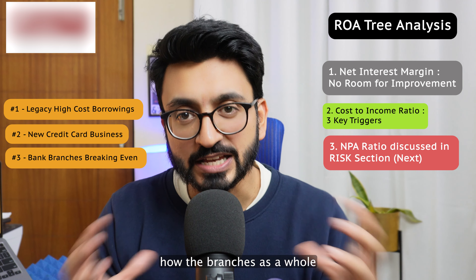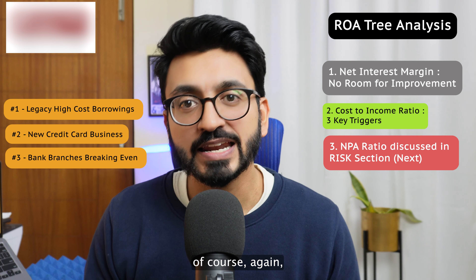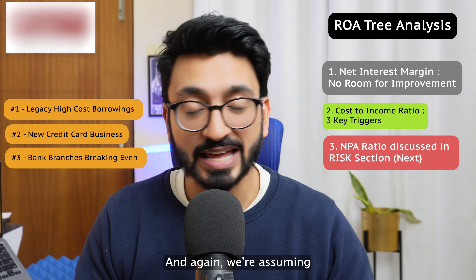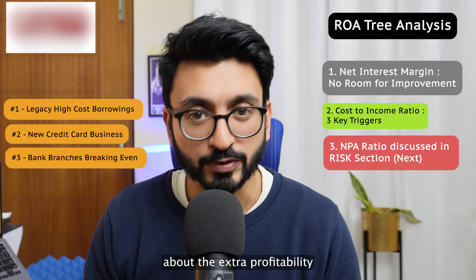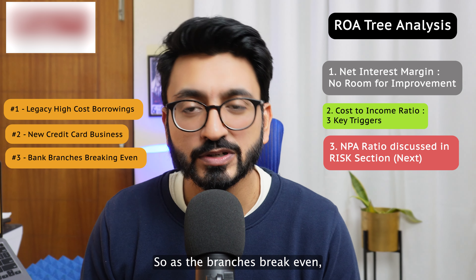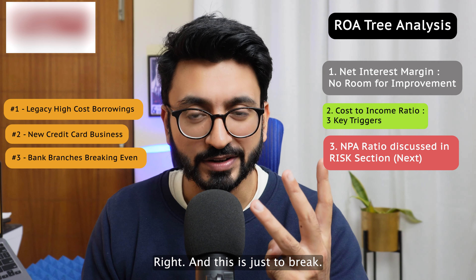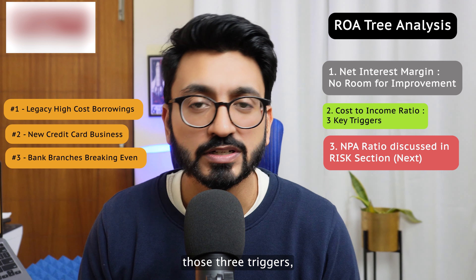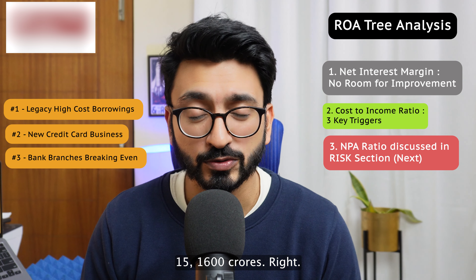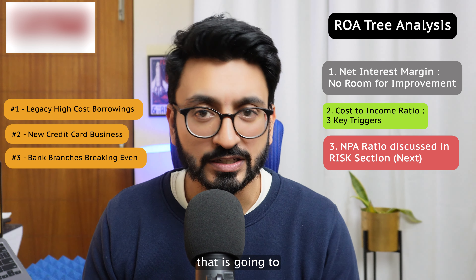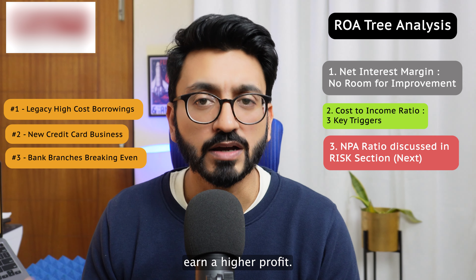The third source is the branches themselves. We discussed how the branches as a whole are still loss-making because they are relatively new and haven't broken even. As these branches mature and break even — and we're just assuming break-even here, not even talking about extra profitability — the bank is expected to save roughly around 500 crores. So adding all three triggers together — and this is just to break even — the bank will have roughly around 2,000 crores going to the bottom line, or after tax roughly around 1,500-1,600 crores.